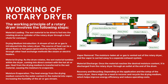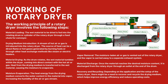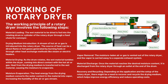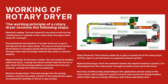Now moving on to the working of the rotary dryer. The working principle involves the following steps. First is material loading: the wet material that has to be dried is fed into the rotating drum or cylinder of the rotary dryer. This feeding of material is assisted through a feed conveyor.